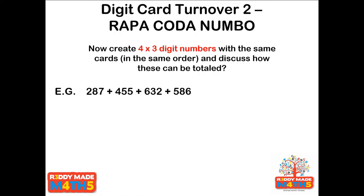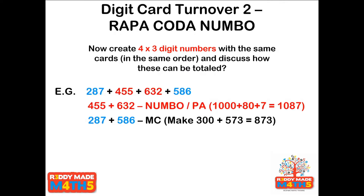For three-digit numbers, I've used the same cards in the same order but made three-digit numbers out of them, just as we did on the table. Pause the video and see what strategies you can come up with. This is a great activity for children in years four and five to develop mental calculation. I straight away went for a number bond — I spotted a 1000: 600 and 400 makes a thousand, then just partition the rest: 50 and 30, 5 and 2.